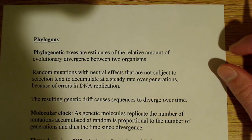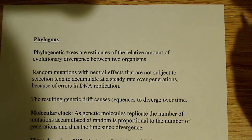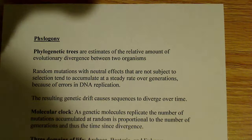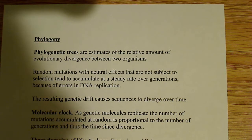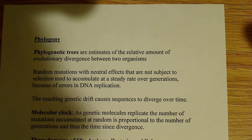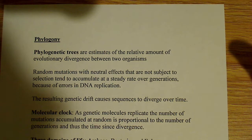I want to talk about phylogeny, or phylogenetic trees. Phylogenetic trees are estimates of the relative amounts of evolutionary divergence between two organisms. You might have heard of Carl Woese, who was a very famous biologist who came up with the idea of investigating 16S ribosomal RNA, found in the small ribosomal subunit, and sequencing it to compare sequences between different organisms. What he found was a whole new kingdom — essentially a whole new classification system based on genetic sequencing.